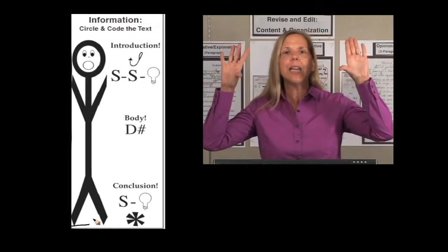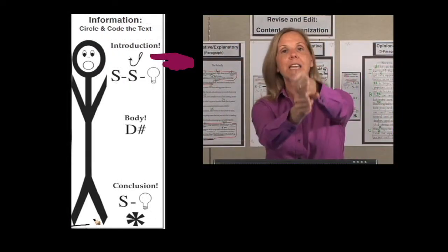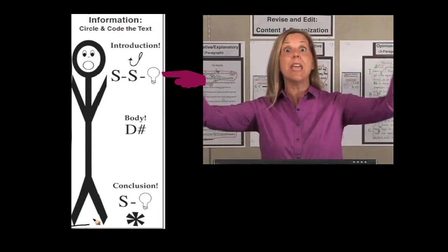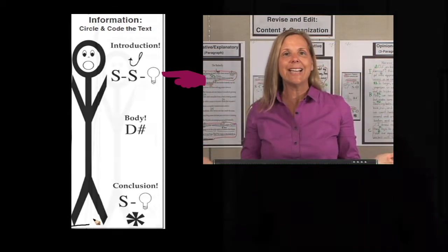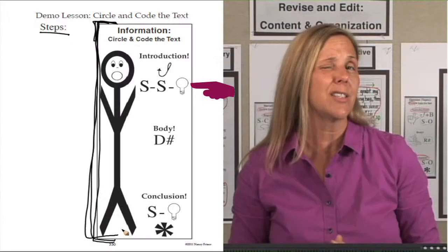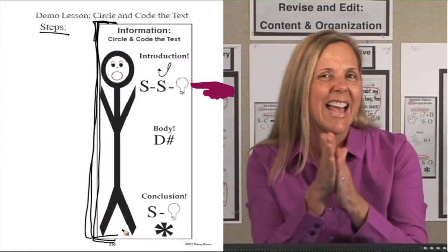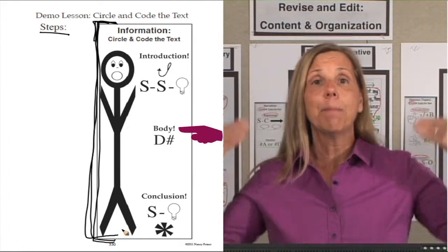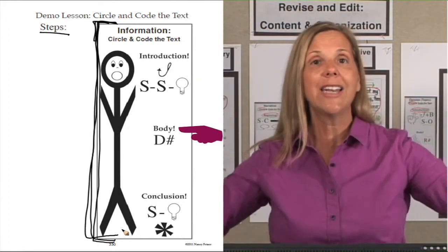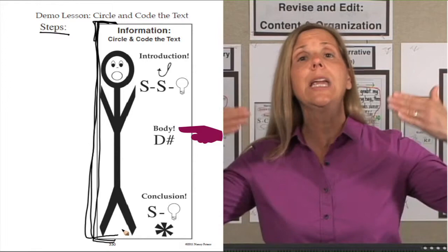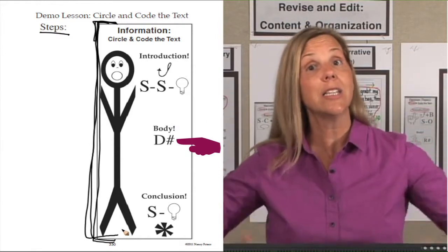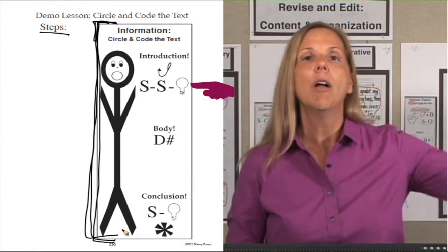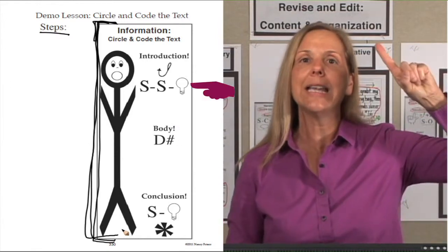What needs to be in the introduction? Hook in the reader, then introduce the big idea. And what's the secret formula for our big idea? SS light bulb. Let's go to the body. What are we going to look for in the body? Details, details, details — and the details need to be about the big idea.